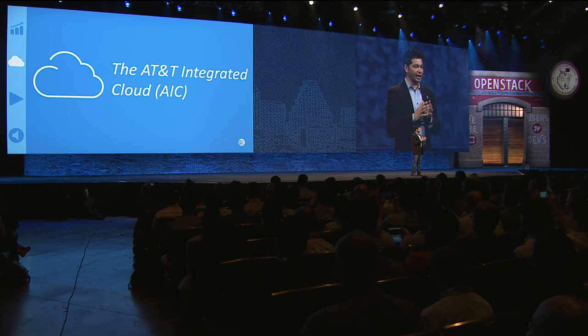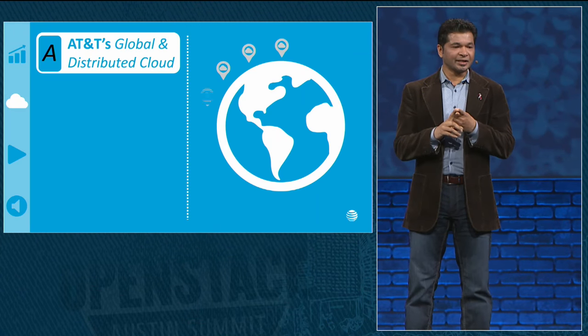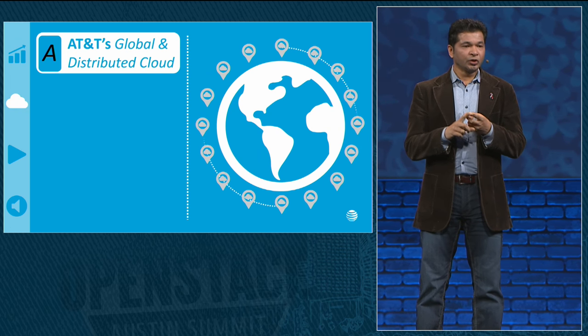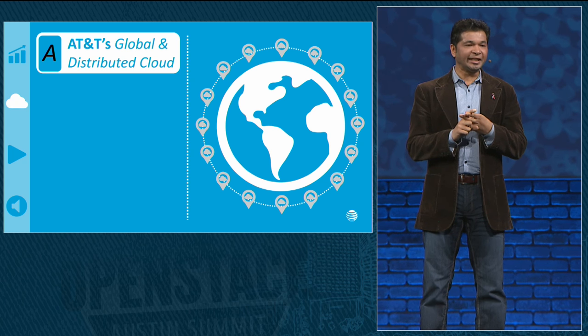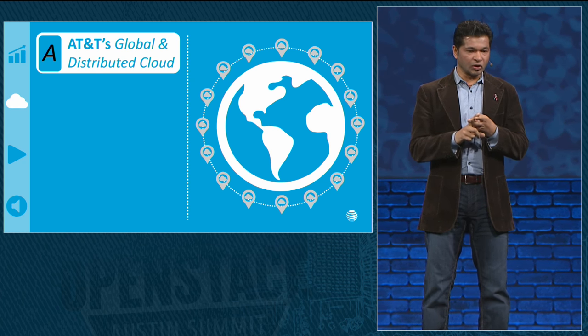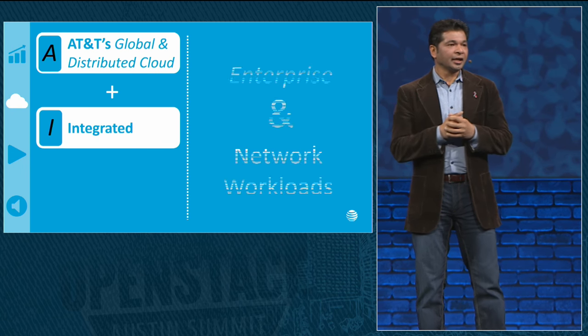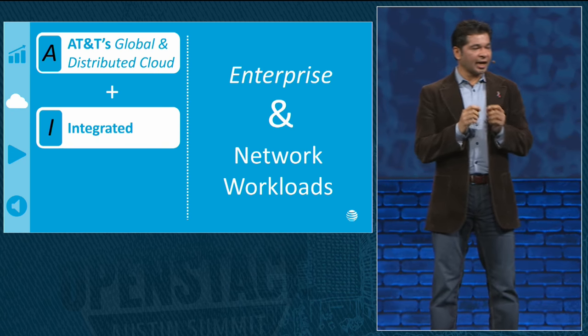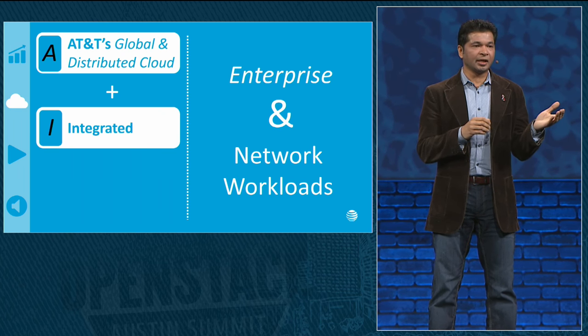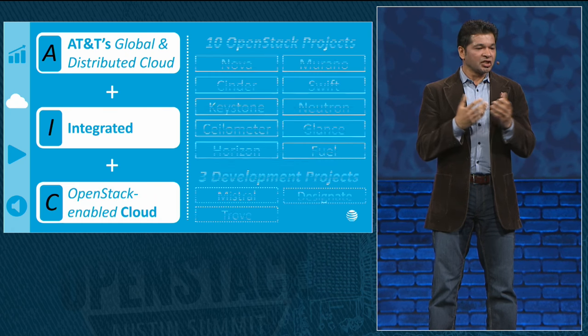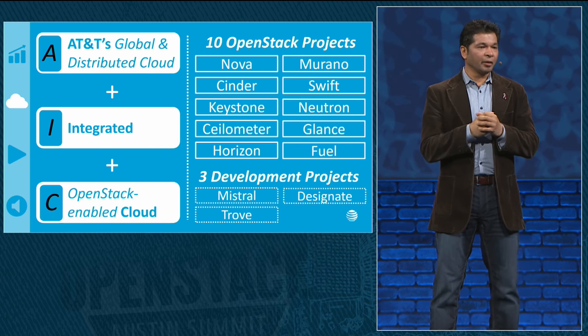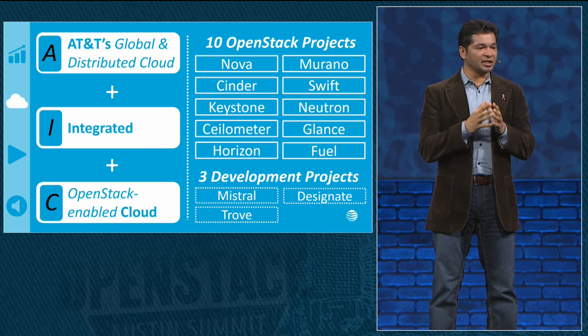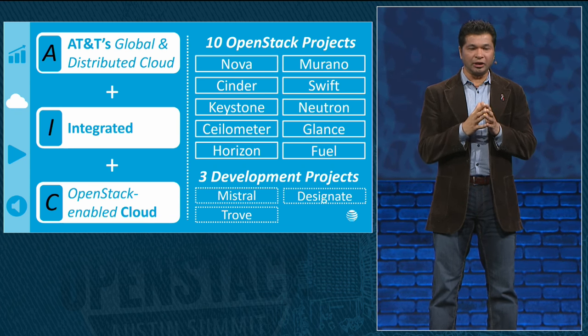Let's dig further into AIC, a critical component of our answer. I'll use the AIC acronym to describe three key characteristics. A — it's AT&T's global and distributed cloud; to achieve our 75% goal, we will need nearly 1,000 AIC zones across the globe. I — it's integrated, with a single code base for both enterprise and carrier-grade workloads. C — it's a cloud platform, and more importantly, OpenStack sits at AIC's core, which has catapulted us forward in our cloud journey.